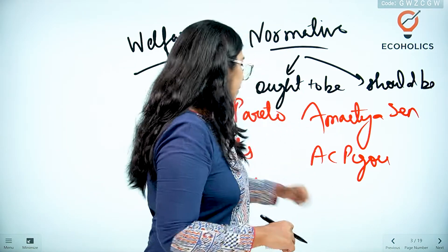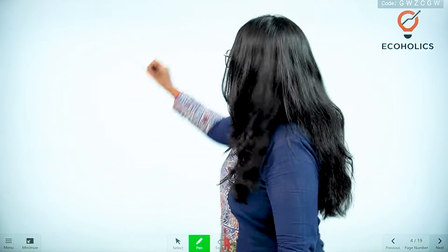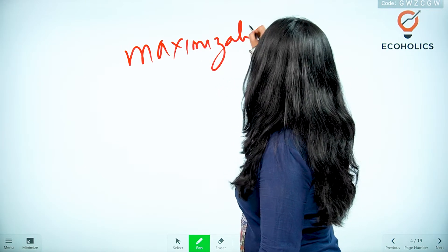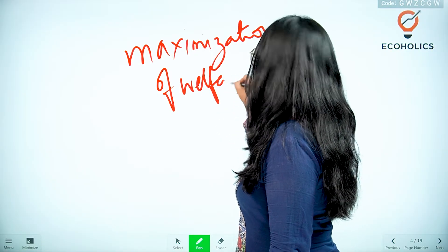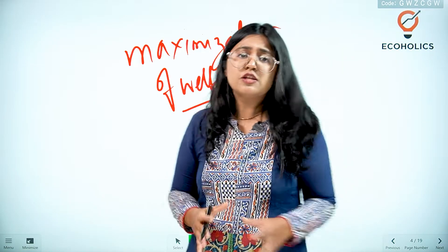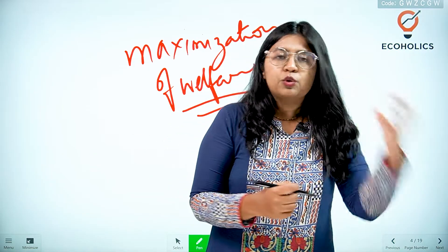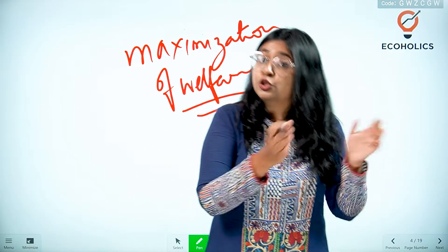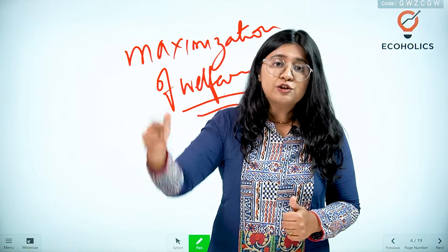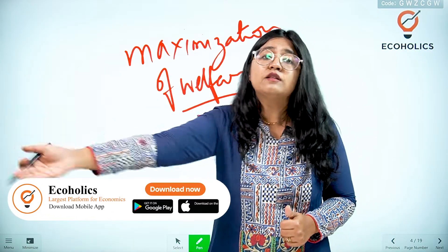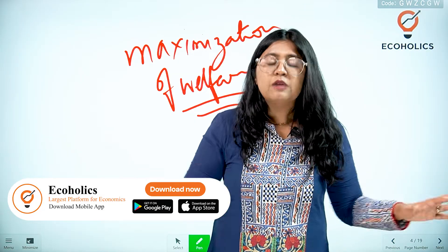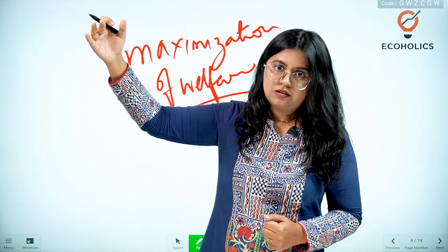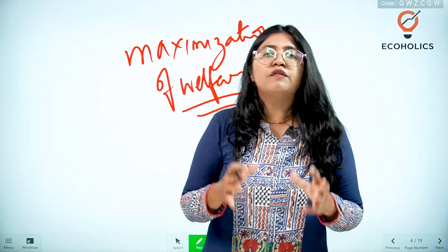What is this welfare approach all about? The welfare approach actually talks about the maximization of welfare. But obviously, how can maximization of welfare be done? Usually when we talk about production, consumption, and distribution, all of these economic activities should be done under the welfare approach, but in such a way that it doesn't happen at the expense of someone else. So it means that everyone receives welfare and over time their welfare also increases. These are the major parameters of the welfare approach.